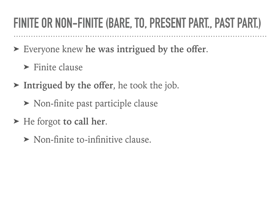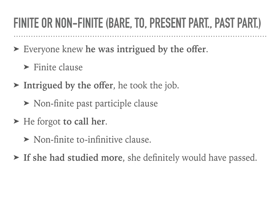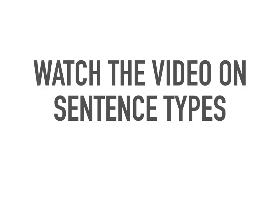Next: 'He forgot to call her.' 'To call her' is a non-finite to-infinitive clause. Finally: 'If she had studied more, she definitely would have passed.' 'She had studied' is a conjugated verb, which means it's a finite clause. Now if you have more questions on this, you can watch the video on sentence types and you can also go back and review some of the examples that we've covered.